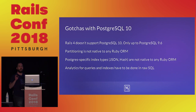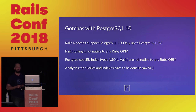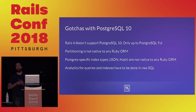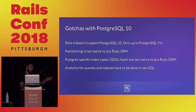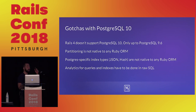A few last-minute gotchas with Postgres 10 and Rails. Rails 4 doesn't support Postgres 10 — the connection protocols changed, so Rails 4 only supports up to Postgres 9.6. If you want to move to Postgres 10, you will have to be on Rails 5. Partitioning is not native to Ruby and Ruby on Rails ORMs, as are specific index types like hash indexes and JSON indexes for full text query searching. Analytics queries are also only available in raw SQL.